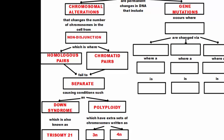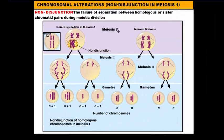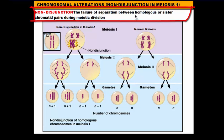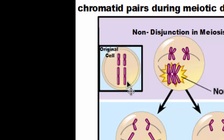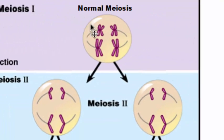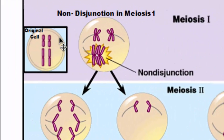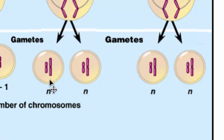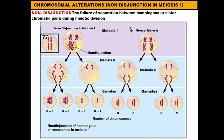Let's take a look at how this all works in nondisjunction. Nondisjunction is the failure of separation between either homologous or sister chromatid pairs during meiosis. Here we have normal meiosis: our original cell replicates the chromosomes, they line up in the middle in metaphase, and then in anaphase the homologous pairs are pulled apart. The chromatid pairs get separated, and then we go from our 2n number of 4 chromosomes to our haploid n number of 2 chromosomes. This is what's supposed to happen.